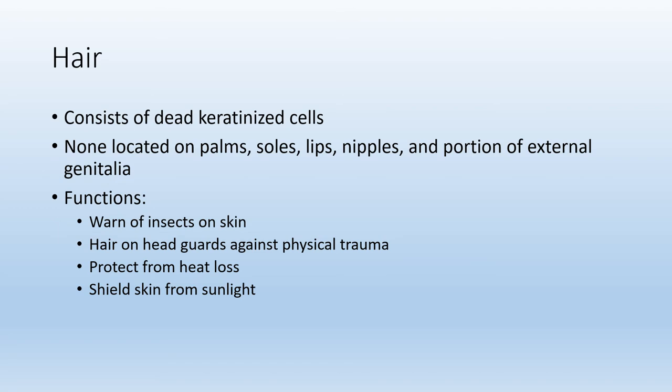Another structure that contributes to the integumentary system is hair. Hair is dead keratinized cells, and this keratin is different from the keratin in your skin. The keratin in skin is soft, whereas the keratin in hair has been hardened. Usually there is no hair found on the palms of your hands, the soles of your feet, amongst other locations. Overall, hair warns of insects on the skin, the hair on your head protects against physical trauma, hair helps prevent heat loss, and it also shields the skin from sunlight.